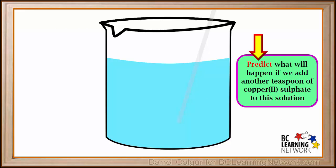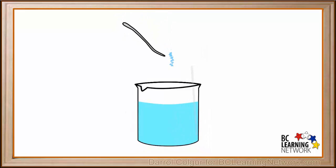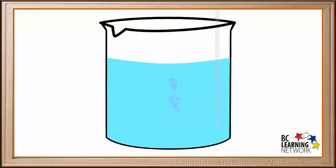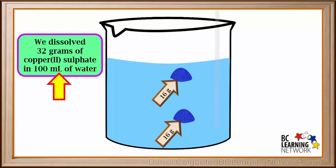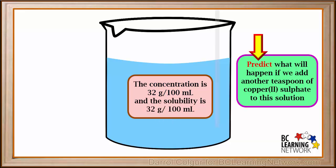Now predict what will happen if we add another teaspoon of copper sulfate to our solution. We'll add a second teaspoon of copper sulfate to the water. Notice that all 16 grams dissolve — no undissolved solid has fallen to the bottom. So we were able to dissolve 2 teaspoons, or 32 grams, of copper sulfate in 100 milliliters of water. The concentration of copper sulfate is now 32 grams per 100 milliliters, which equals the solubility. Therefore, we've added exactly the amount of solute that can dissolve.